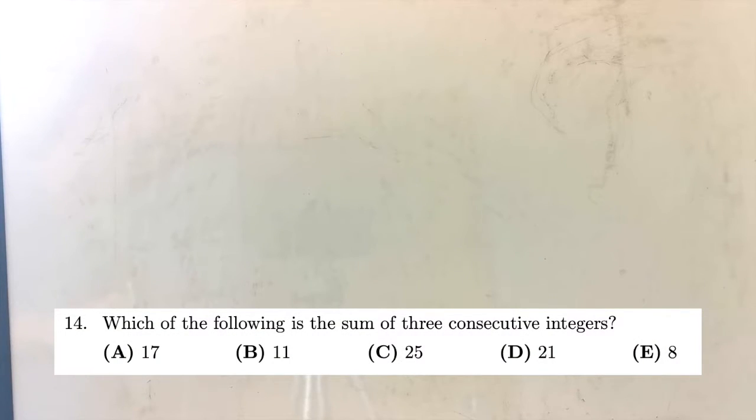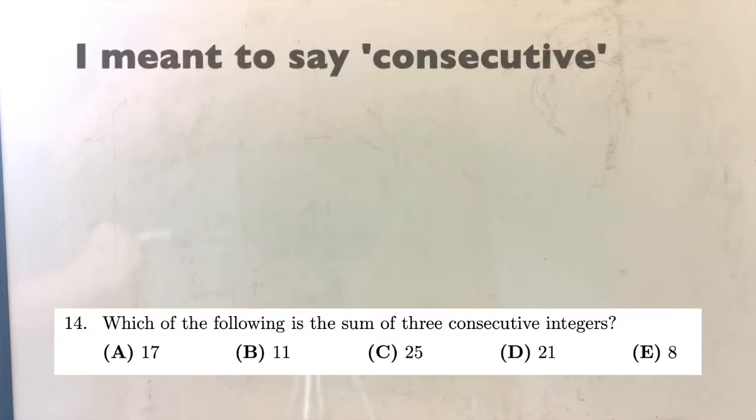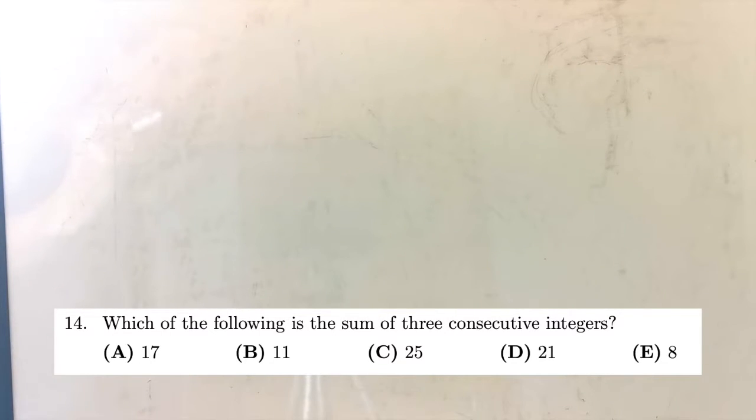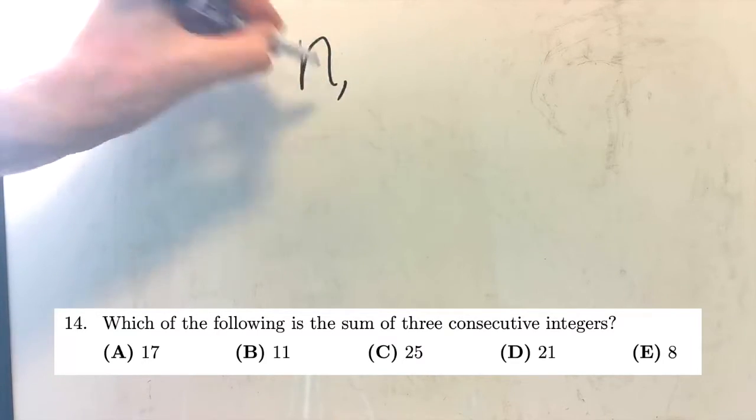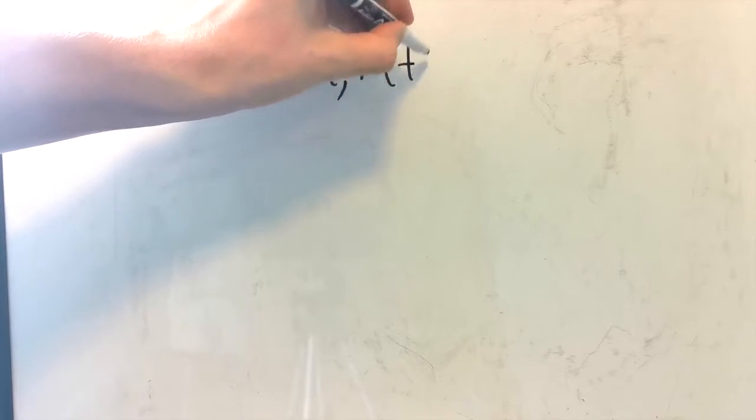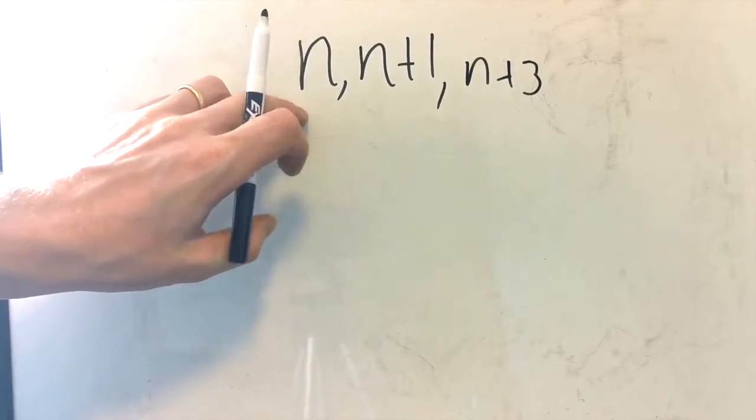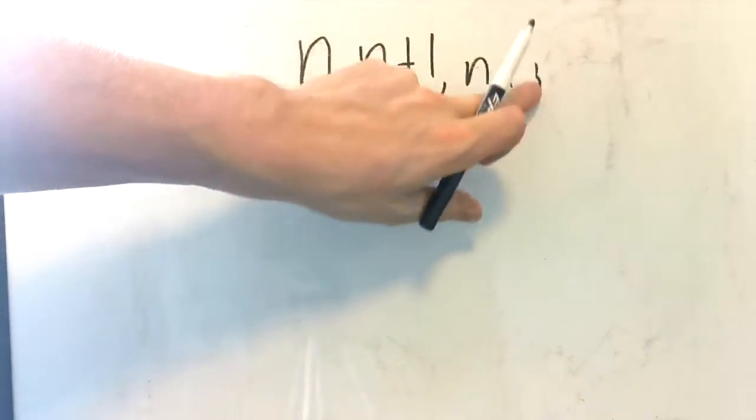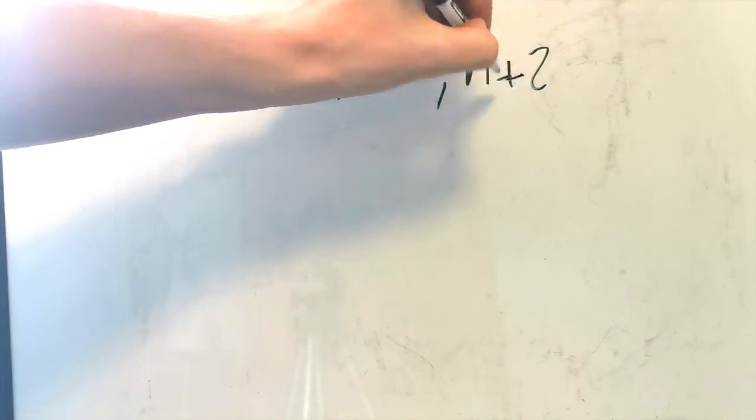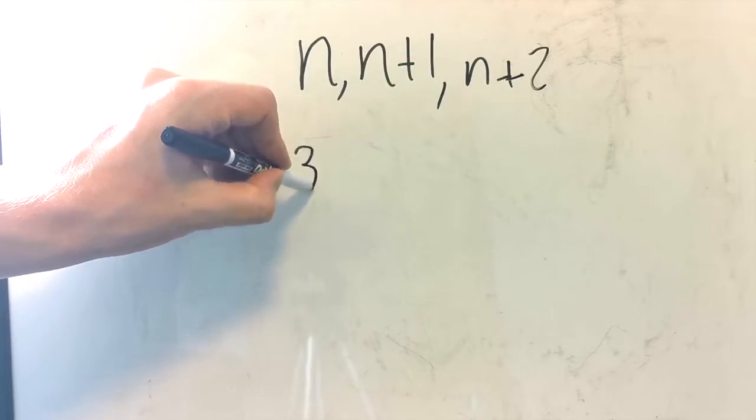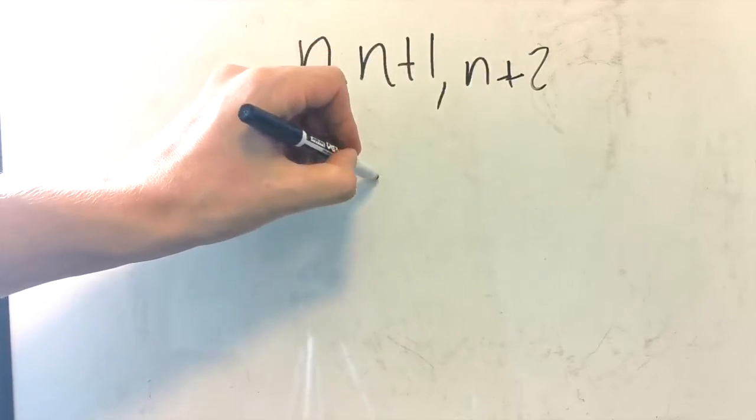So the first one is a question from a few years ago, I think in 2020, and it concerns the sum of three positive integers. Now, the sum of consecutive integers can always be written this way: n, n plus 1, n plus 3. So even if we don't know what n is, we add them all up. Sorry, not n plus 3, n plus 2. We add them all up and we get 3n, and 1 plus 2 is 3.